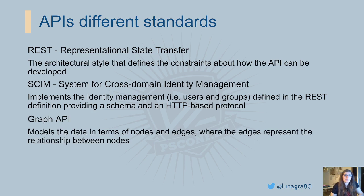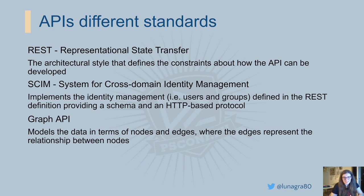Lastly, Graph API models the data in terms of nodes and edges, where the edges represent the relationships between the nodes — that's why the word graph, like in graph theory in math. The most interesting feature the Graph API has is the possibility to interact with different resources located in different nodes with a single request. The most common example of a company using Graph API is Facebook. With one call, you may be able to get a post, the author, the author profile, and all the comments, whereas with a pure REST API, you would need to call multiple endpoints to get all the data you need.